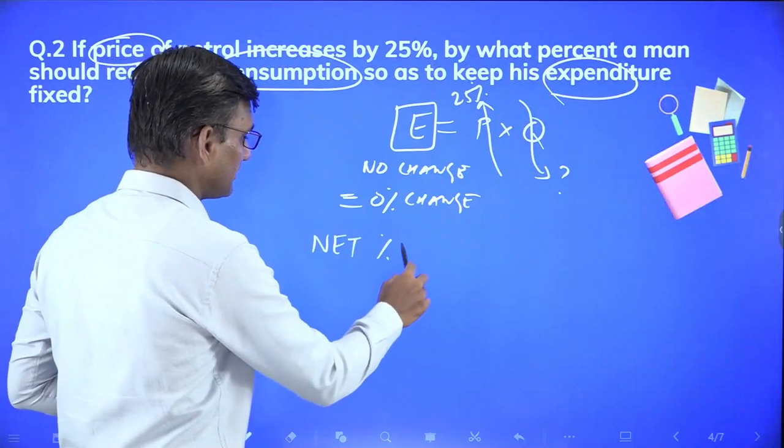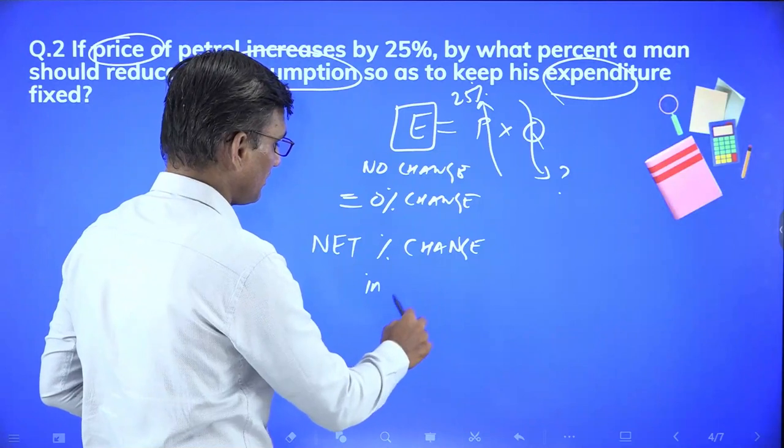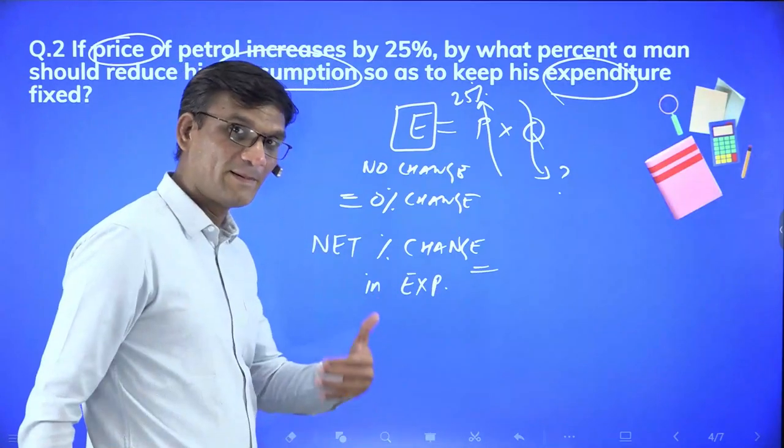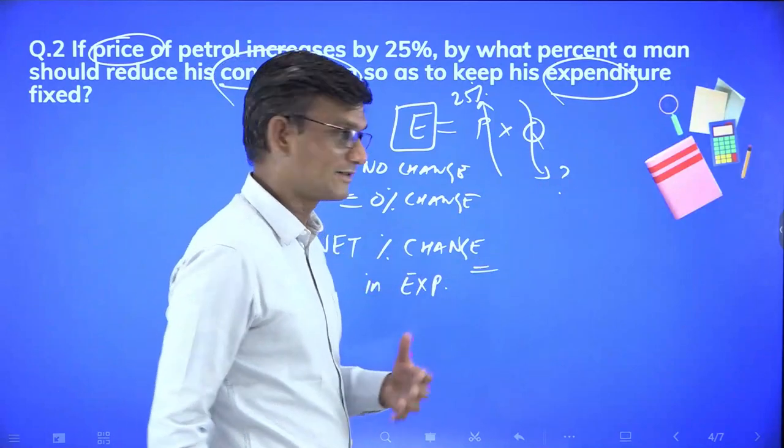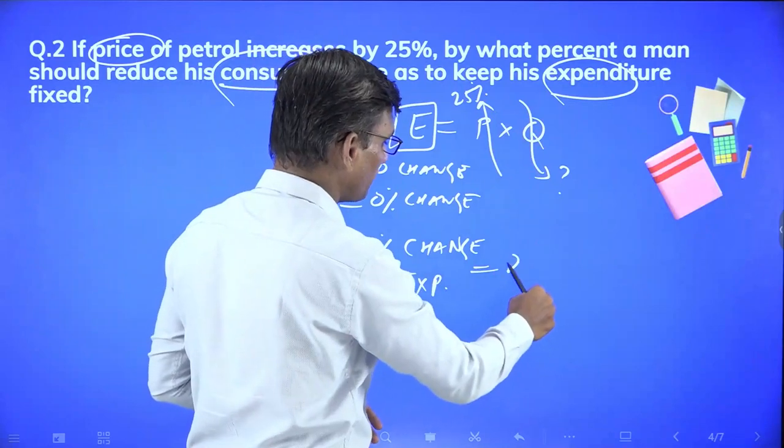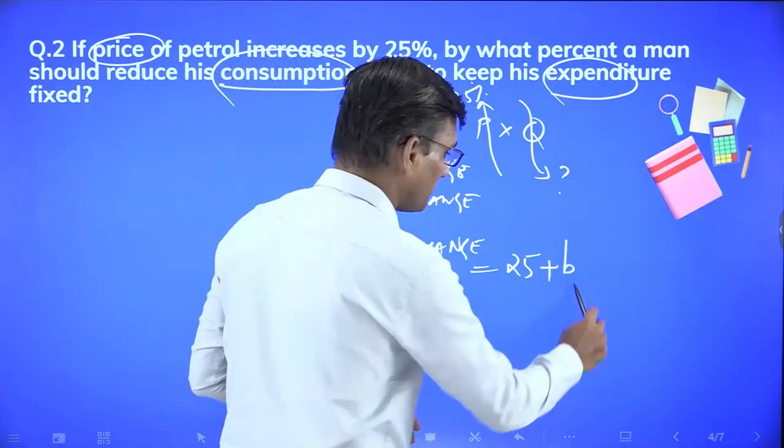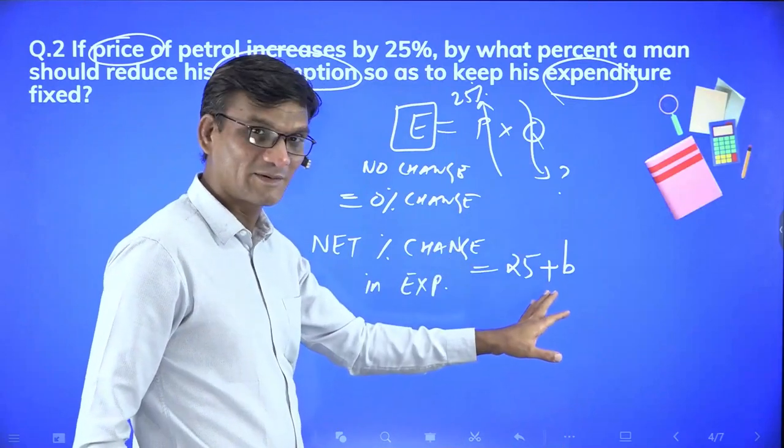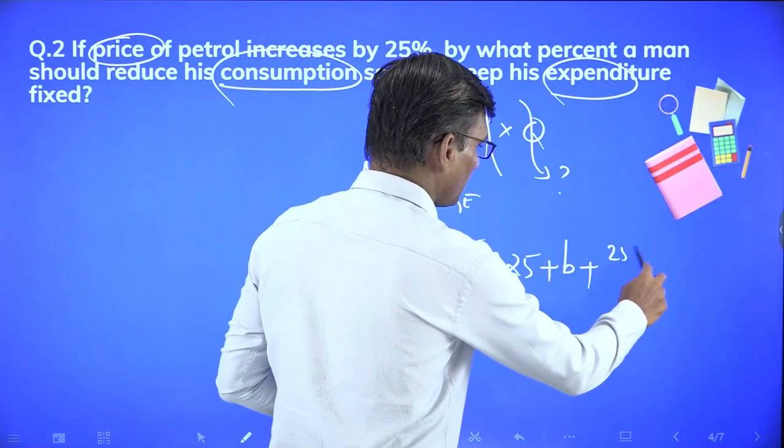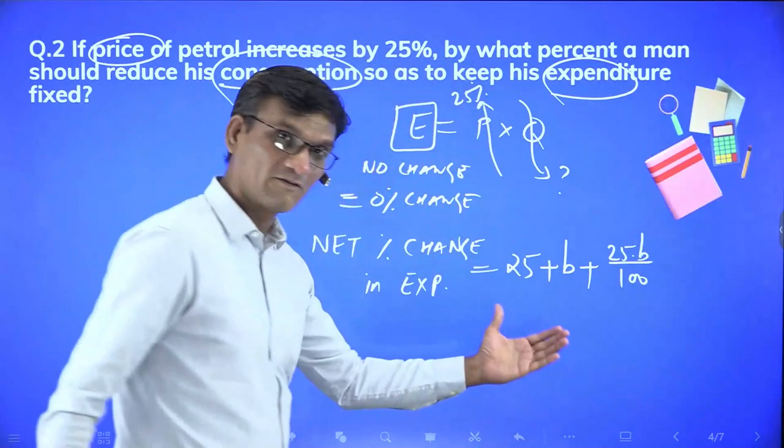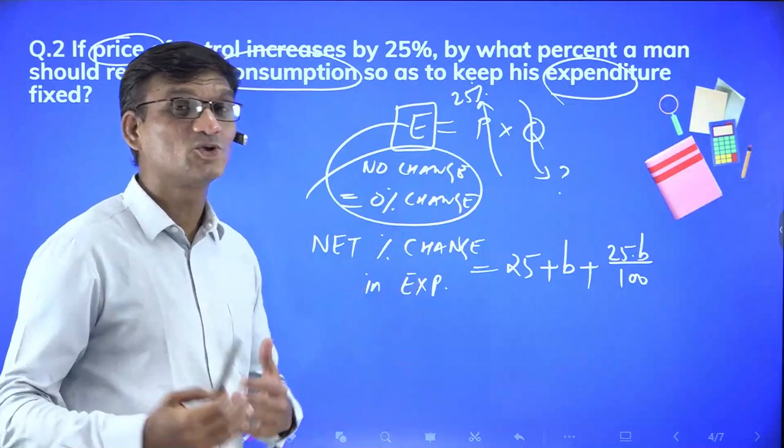No change means zero percent change. So we use the area formula. Net percentage change in expenditure equals a plus b plus ab by 100. Here a is the change in price which is 25, and b is the change we need to find in quantity. We want zero percent change in expenditure.